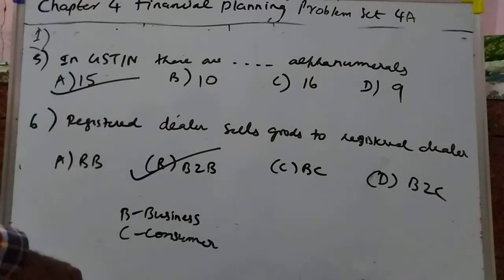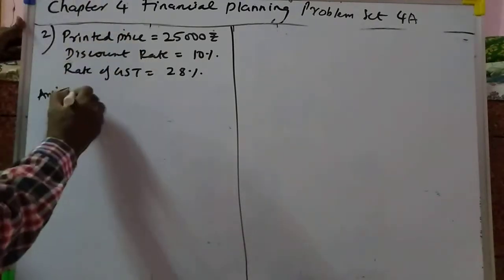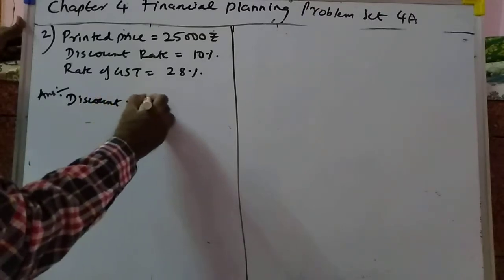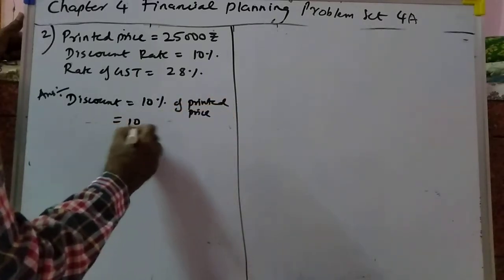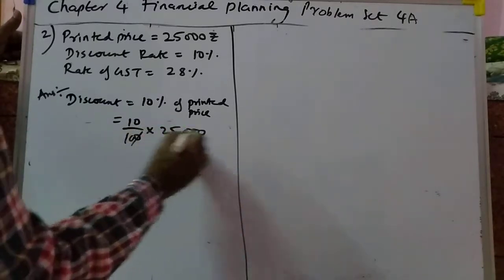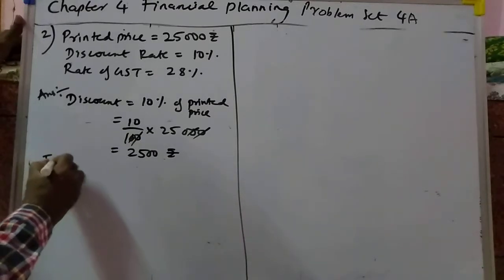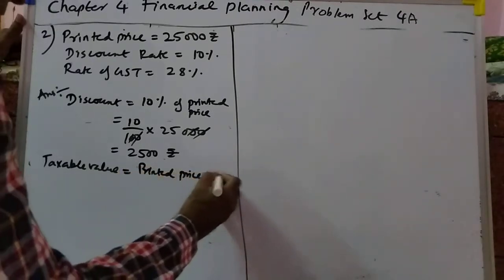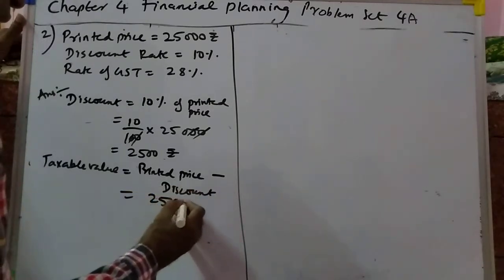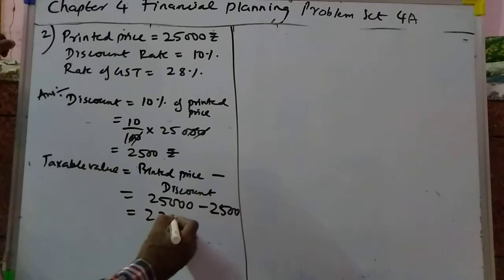Next we move on to the second problem. The printer price is 25,000, discount rate 10%, GST 28%. First find the discount: discount is equal to 10% of printed price, so that will become 10 upon 100 into 25,000. You will get 2,500 rupees.